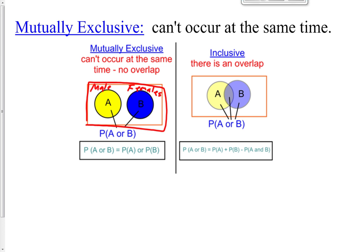Mutually inclusive means that there is an overlap. It might be: what's the probability that you're a male or that you are left-handed? You might have the males in one bubble and the left-handed people in another bubble, and then in the middle you've got the males that are also left-handed — those people are caught in the overlap. So exclusive means they cannot occur at the same time; inclusive means that they can.